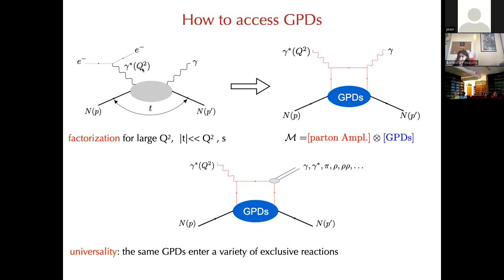Q is the virtuality of the photon — the difference between the momenta of the final and initial electron — and T is the difference between the momenta of the proton. Writing momentum conservation: k plus p equals p prime, k prime, and q prime of the photon. So k prime minus k is not equal to p prime minus p in general, only when the real photon is emitted from the electron leg. This is an exclusive process — you detect the photon and reconstruct the final proton momentum from momentum conservation.